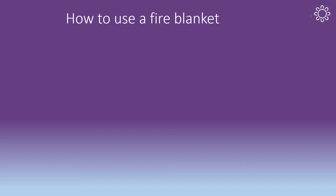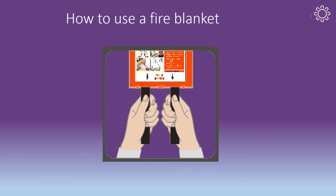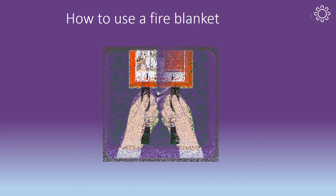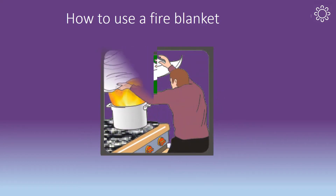To use the fire blanket, you will first need to remove it from its wall mounted holder by pulling the two tabs at the bottom. Unfold the blanket so it is completely opened. Hold the fire blanket with your hands wrapped in the top edge of the blanket — this will protect your hands from the heat and flames. Cover the flames completely with the fire blanket by throwing or placing the blanket on top of the fire and leaving it there until the fire goes out.